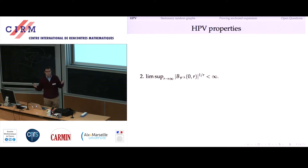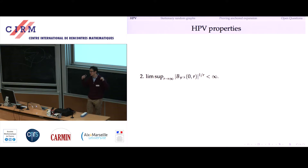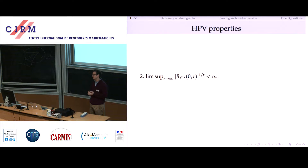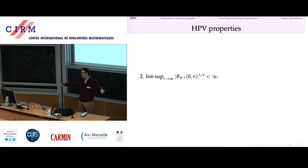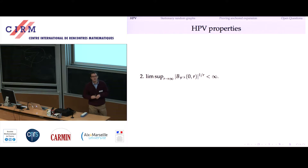Another basic property is that the volume growth of this graph is exponential. This seems totally obvious and it's extremely annoying to prove — I don't know an easy proof of it. The only way I know is to compare distances: take the ball in the Voronoi or Delaunay graph and show that it embeds into a ball in the hyperbolic plane of the same order of magnitude radius. This is a relatively complicated argument, but once you have it, it's easy.